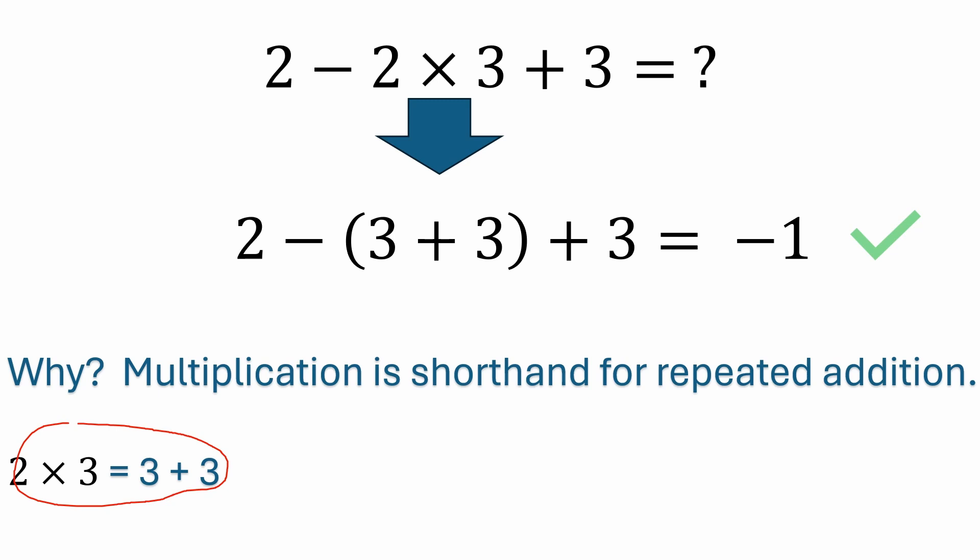Minus 2 times 3 is the same thing. I could have written this out minus 3 minus 3 instead of minus the quantity 3 plus 3. So 2 minus 3 plus 3. That's 2 minus 6, negative 4, minus 4 plus 3, negative 1. Same answer.